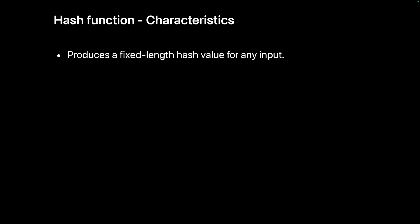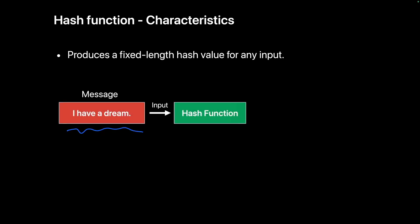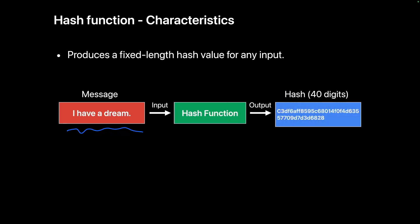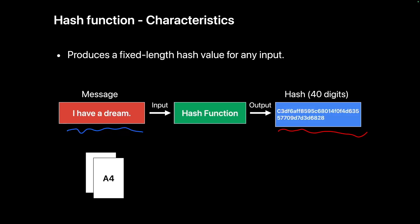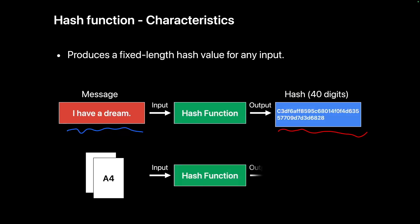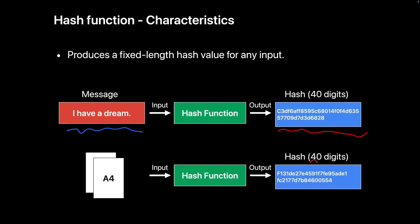For example, we input a 10-character text like 'I have a dream' into a hash function and it produces a 40-character hash. If we input a text that is two pages long into the same hash function, it will still be a 40-character hash, just like the 10-character input. In summary, whether you input a 10-character text or a two-page long text, the hash function will always produce a fixed-length hash value.